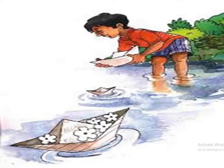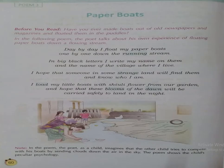He described a boy in this poem who was very fond of making paper boats and used to float them downstream. He also used to put some flowers on it and he used to imagine things. So let's read the poem and find out exactly what he was thinking.